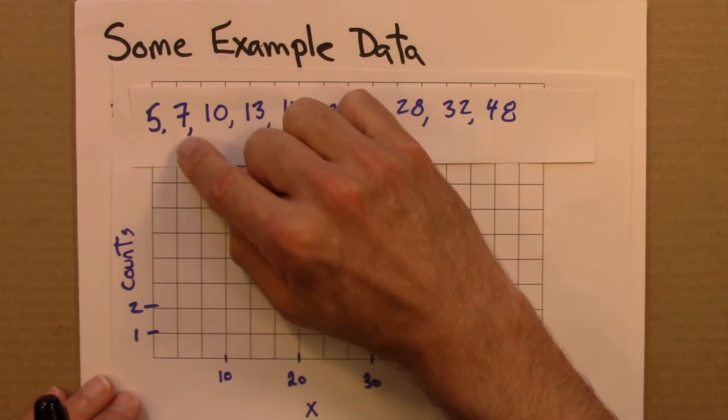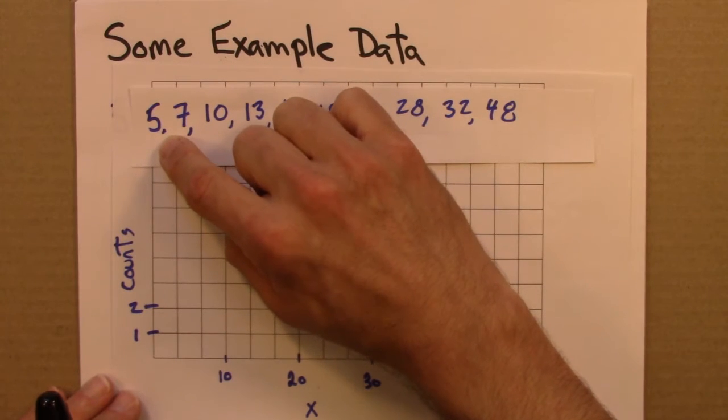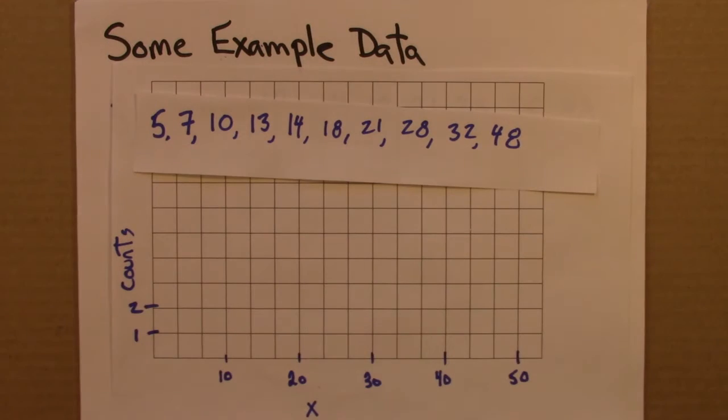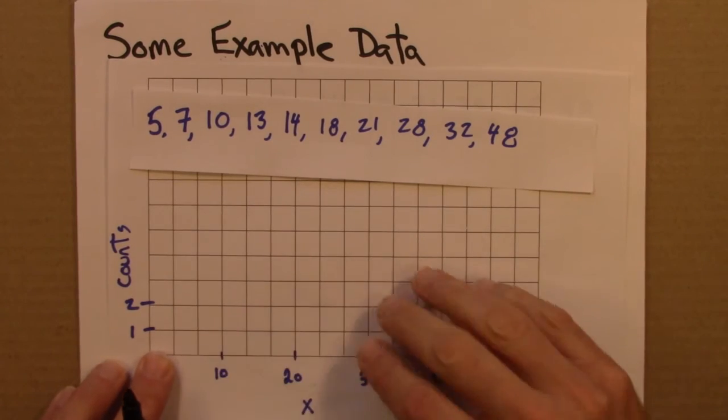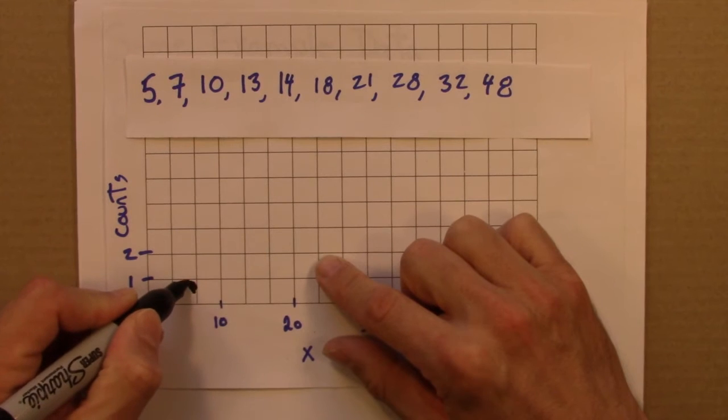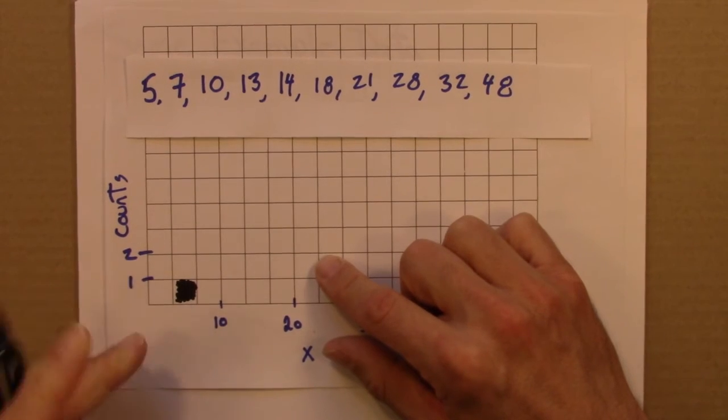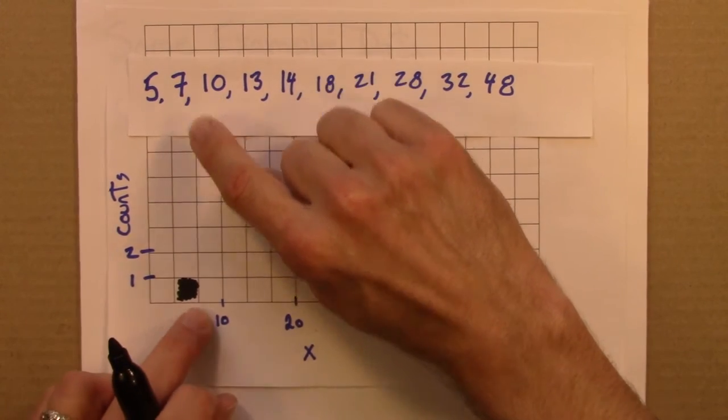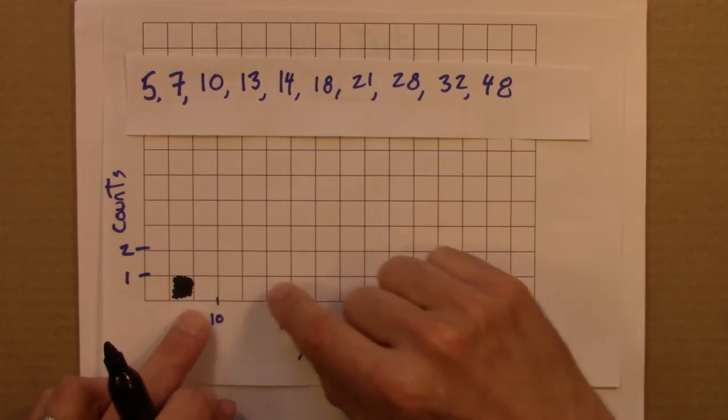Alright, so there's one value that is 5. So 5 would fall in this region. So I would say, alright, there's one in there. I could fill in that box. 7. 7 is between 6 and 2/3 and 10, so there's one in there.